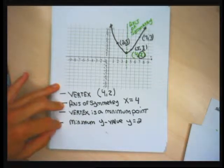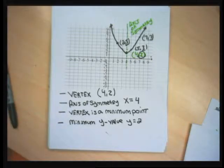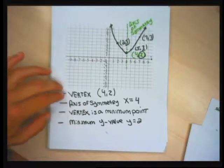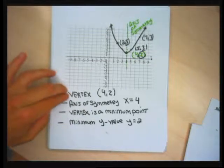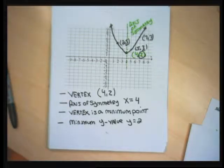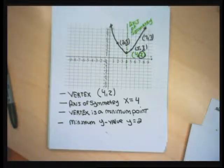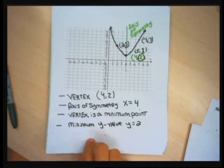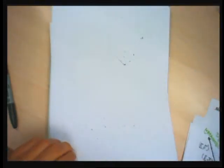When the vertex is a minimum point, the y-coordinate of the vertex will be the smallest y-value. So the minimum y-value of any point on this graph is going to be 2. No matter what point I look at, if I look at any point other than the vertex and stare at its y-value, it will be larger than 2. These are the four features we'll be asked to identify — some problems don't ask for all four.